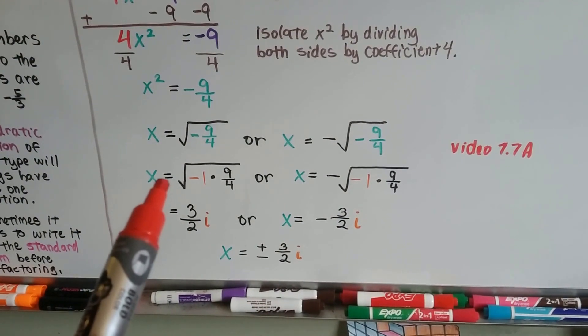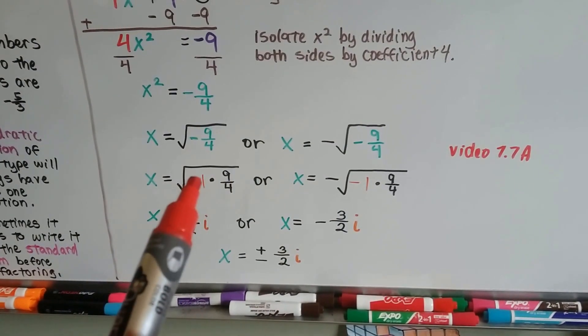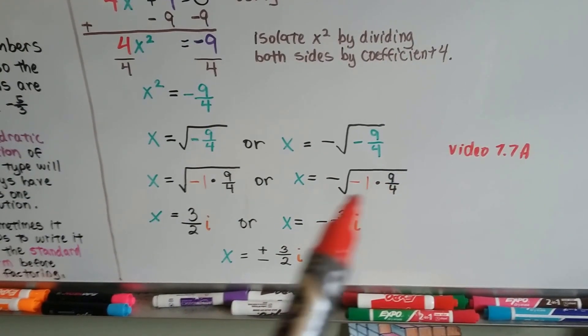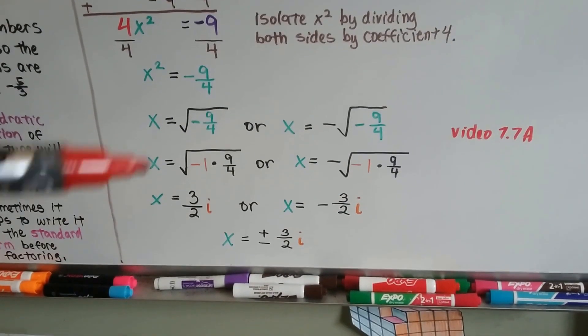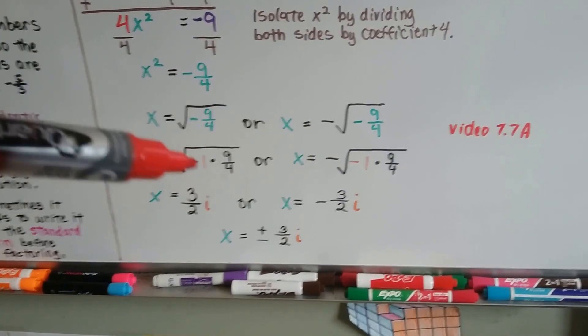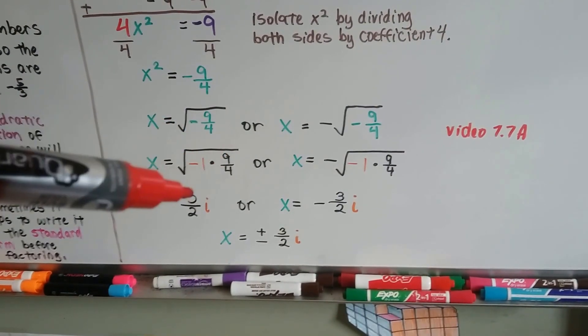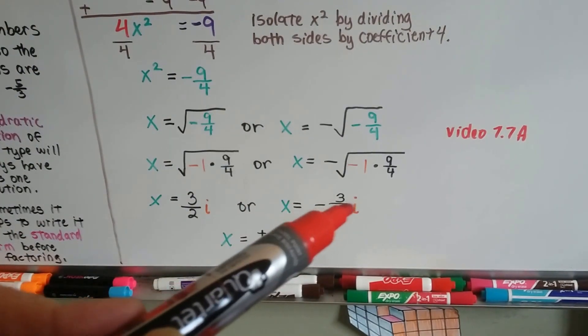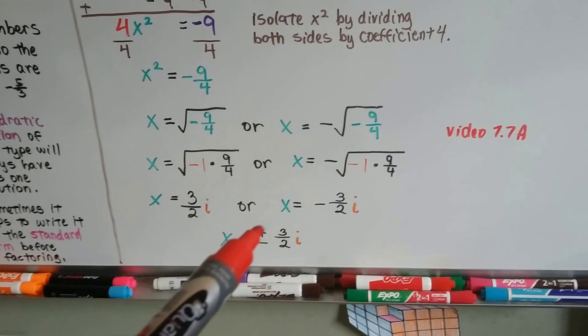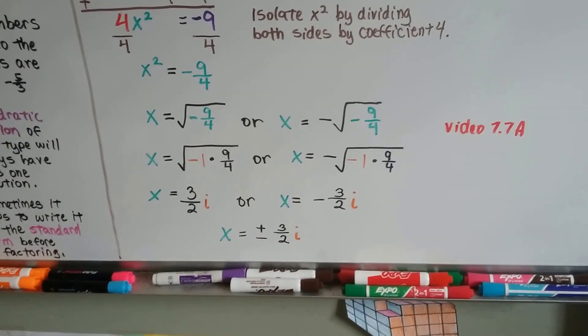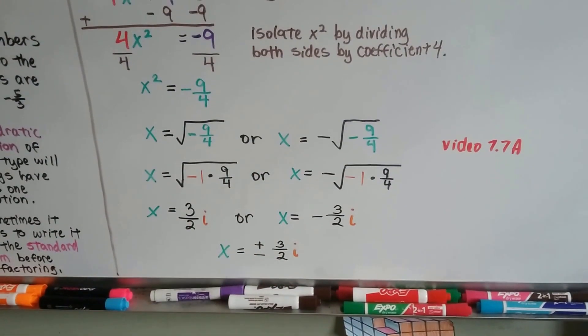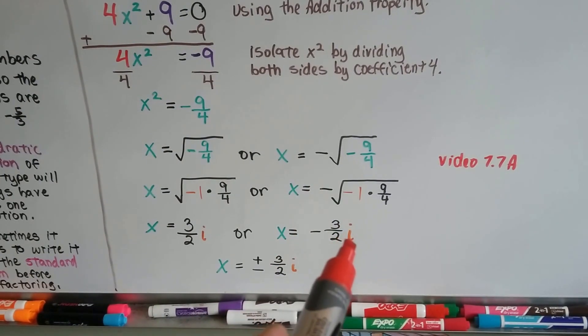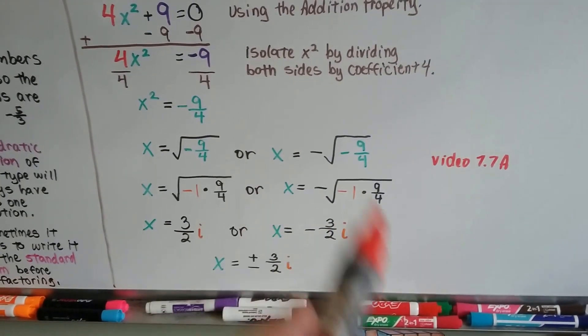What we can do is factor this as negative 1 times 9 fourths under the radical sign, or negative 1 times 9 fourths underneath the radical sign on this side with the negative sign in front. So now we've got the square root of negative 1, which is our buddy i. We simplify 9 fourths to 3 halves, and we've got 3 halves i, or negative 3 halves i. We can abbreviate it as x equals plus or minus 3 halves i. If you're really confused about i, you need to watch chapter 7. We had, I think, 13 videos about the imaginary i and negative 1 and all of that.